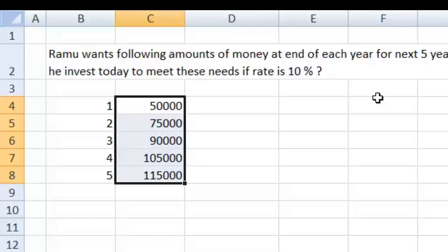At the end of year 1, the money that he requires is 50,000. At the end of year 2, 75,000. At the end of year 3, 90,000. At the end of year 4, 105,000. And at the end of year 5, 115,000. Now the question arises: Ramu wants to know how much should he invest today as lump sum so that he can get these amounts when he requires them.